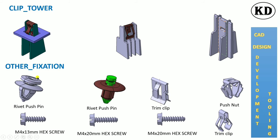Other fixation types include the push pin, rivet push pin, trim clip, push nut, and screw. Different types and sizes of screws are used in plastic or in metal. Trim clip is also used for fixation.